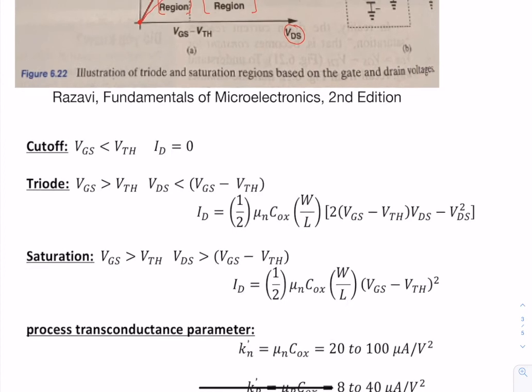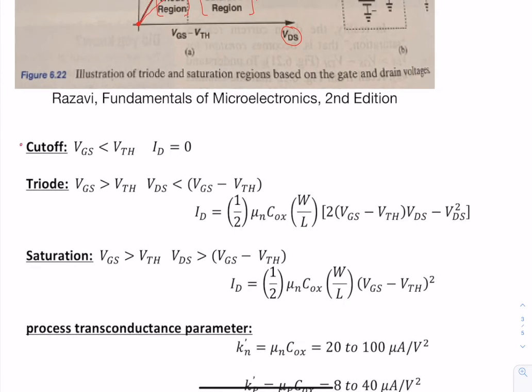These three modes, as I said, there's cutoff, triode and saturation. The conditions for cutoff is that VGS, that voltage between the gate and the source, is less than a threshold voltage. So this is a threshold voltage.